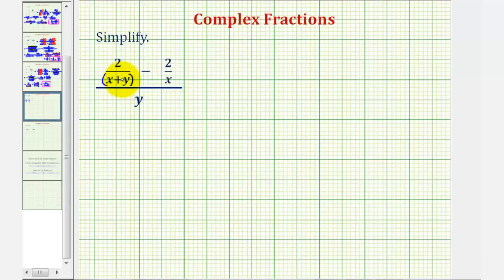Which means this first fraction needs a factor of x, so we're going to multiply by x over x. And then for the second fraction, it's missing a factor of x plus y, so we'll multiply by the quantity x plus y, over the quantity x plus y.